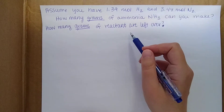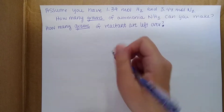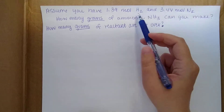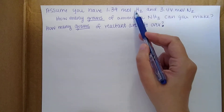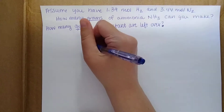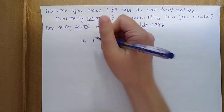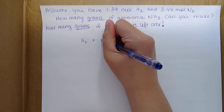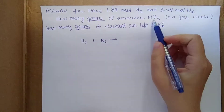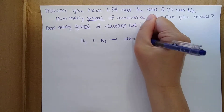This question is a good chance to practice writing out some equations. They give us the two reactants and the product, so let's write those down. We know we're reacting H2 with N2 and we're going to be forming ammonia, so NH3.